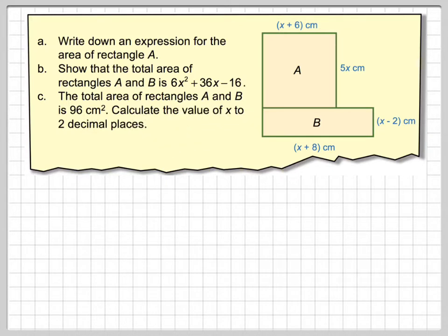So basically, we're coming up with an expression of x for the total area of this, and then we have to put it equal to 96 to find the value of x. Okay, part A. The area of rectangle A, that's just going to be that length times that length, so it's going to be 5x in brackets times (x + 6) cm².